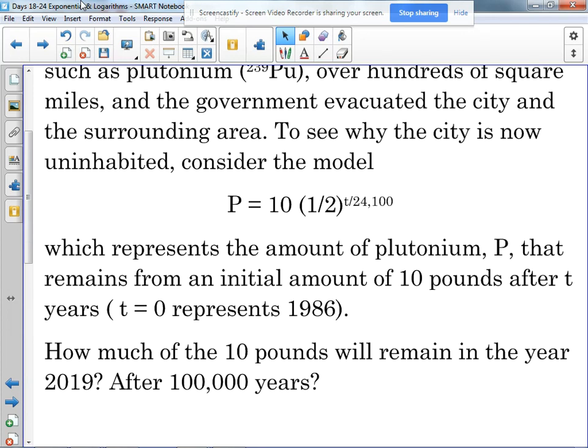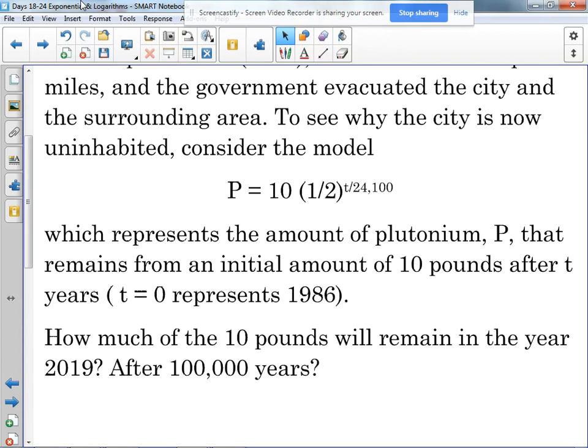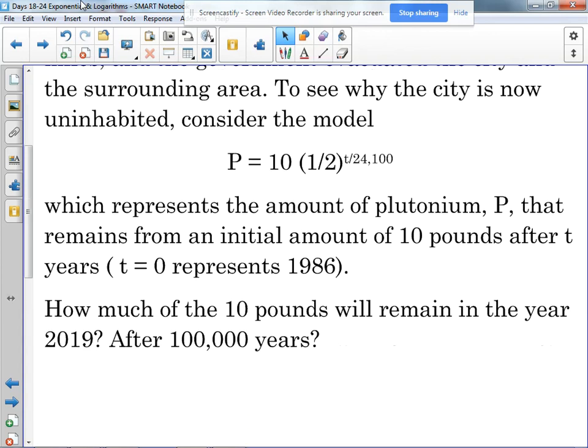That represents the amount of plutonium that remains from an initial amount of 10 pounds, just 10 pounds after T years, where T equals zero represents 1986.